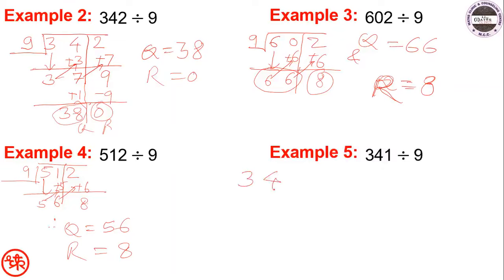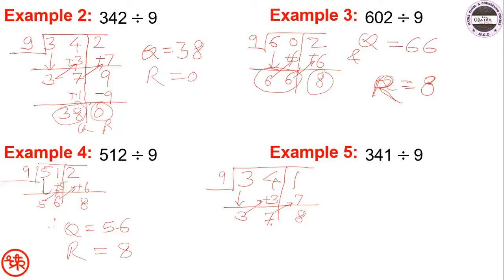Next example: 341 divided by 9. Draw vertical line and horizontal line. Write 3 below 3, add this 3 to get 7, add this 7 to get 8. Since 8 is smaller than 9, quotient equals 37 and remainder equals 8.